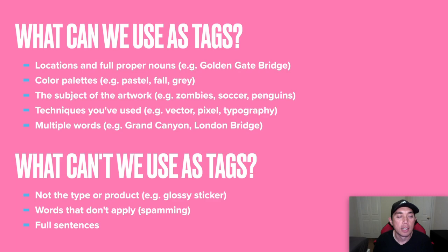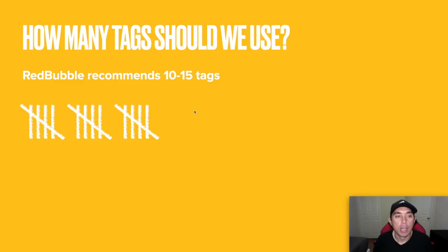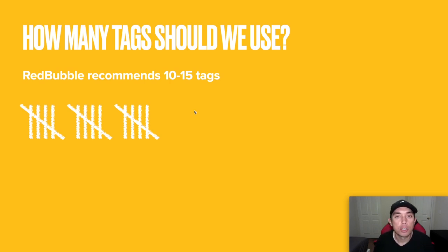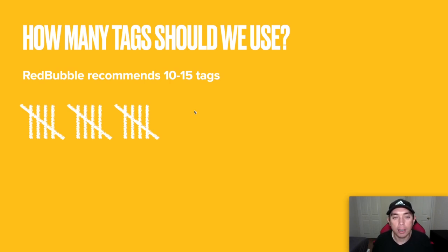Before we get into Redbubble, how many tags should we use? Redbubble recommends between 10 and 15 tags. You don't need to put a whole bunch — you don't need to put 50 tags — but 10 to 15 relevant tags that match your design. Now that we've talked about tags and caught up on what they are, I'm going to go to the internet and show you exactly where tags go and how to find good tags.